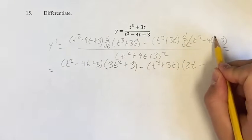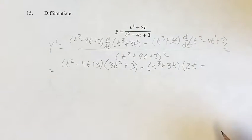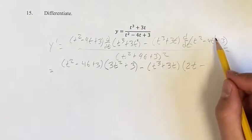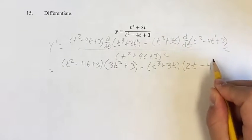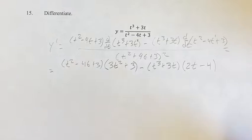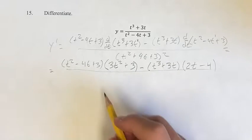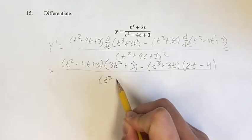And then the derivative of this, again, we have a linear term where t is to the first power, therefore its derivative is just the coefficient, which is 4. The derivative of 3 is 0, because 3 is a constant, so we can just leave that off, since plus 0 doesn't really do anything to the value.